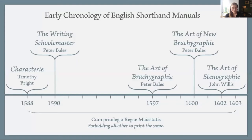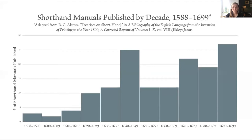In the 17th century things start to change. In 1602 another manual comes out, published anonymously but written by John Willis. This marked a major departure from the first two systems. It was really Willis who set forth the foundational principles of shorthand that would remain in place for the rest of the century and beyond — into Dickens's lifetime. It's no exaggeration to say that every 17th-century shorthand system was either directly or indirectly indebted to Willis.